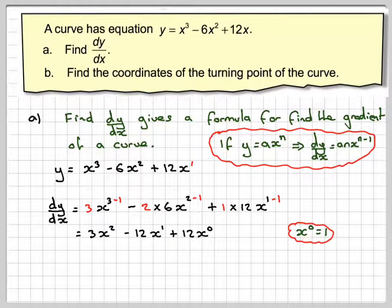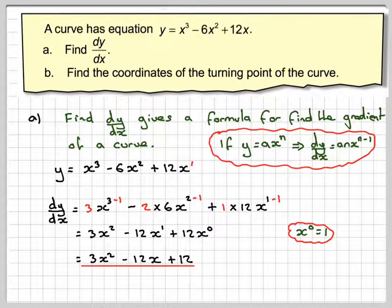And this 1 here we don't normally write in. So we get 3x squared minus 12x plus 12 as my final answer for the dy by dx.